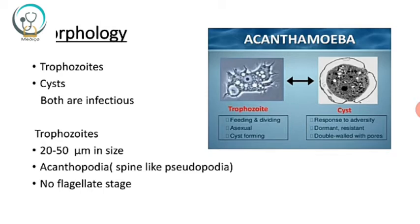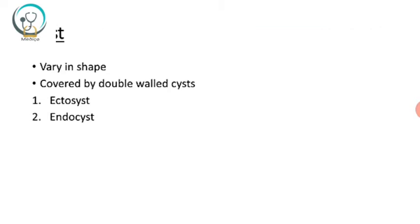Regarding Acanthamoeba morphology, there are two morphological forms similar to Naegleria fowleri, but here both the trophozoites and cysts are infectious. The trophozoite is about 20 to 50 micrometers in size and has a pseudopodia called acanthopodia, which is a spine-like pseudopodium. Unlike Naegleria fowleri, there is no flagellate stage. The cyst varies in shape and is a double-walled cyst having an ectocyst and an endocyst.